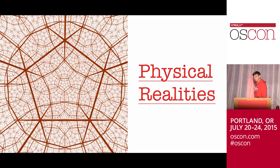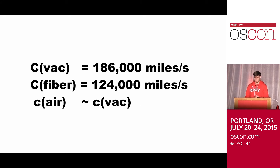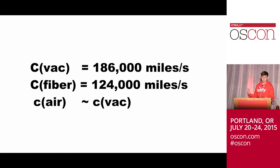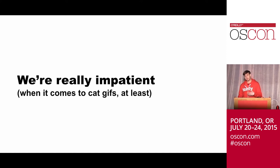I want to start out and talk about the physical realities of the world we live in. All communication, whether digital or analog, is bounded by the speed of light. As humans, that's pretty fast — in a vacuum, we all know that constant from physics class. It's really interesting that the speed of light in fiber is actually about 30% less than in a vacuum or air. Despite these physical limitations, we humans still want everything to happen instantaneously, even though the physics of the universe doesn't allow that.